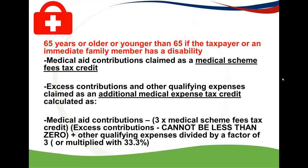To calculate the additional medical expense tax credit, you take your medical aid contributions — both the employer and the employee contributions — and from that you deduct 3 times the medical schemes fees tax credit which was calculated in Part A. That equals the excess.